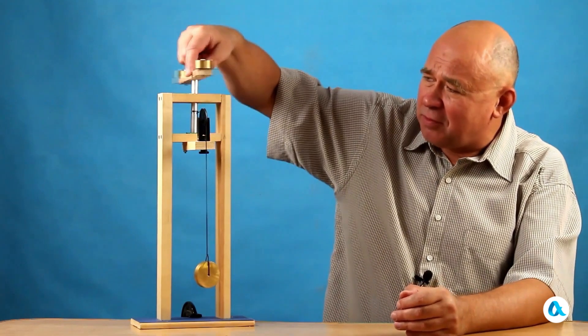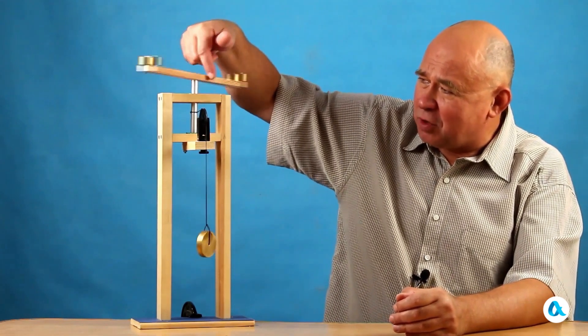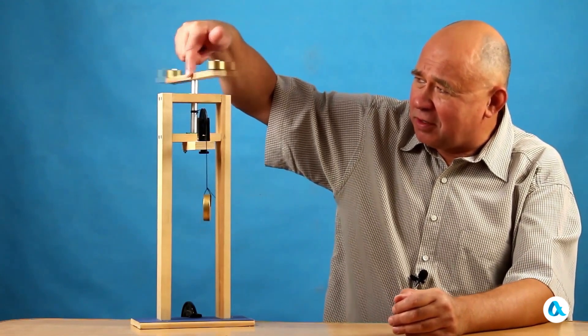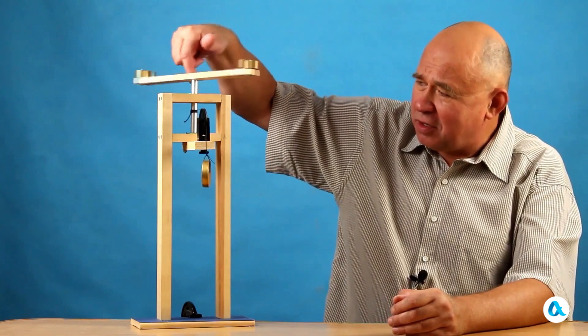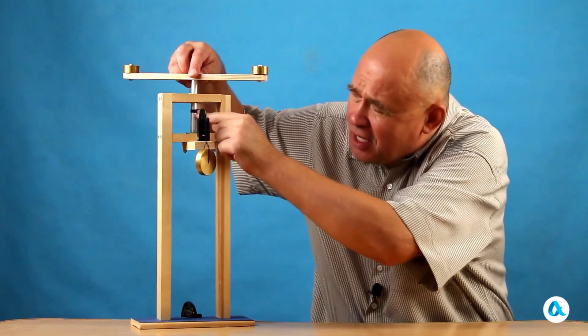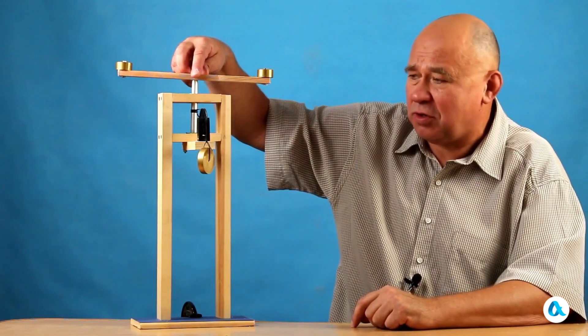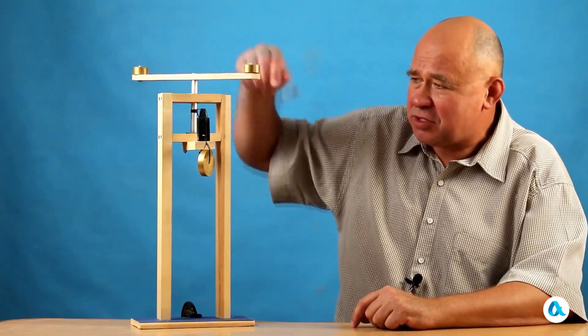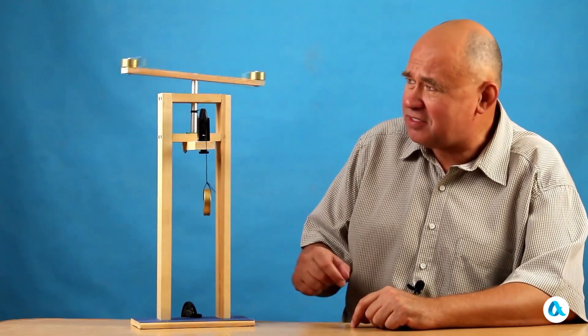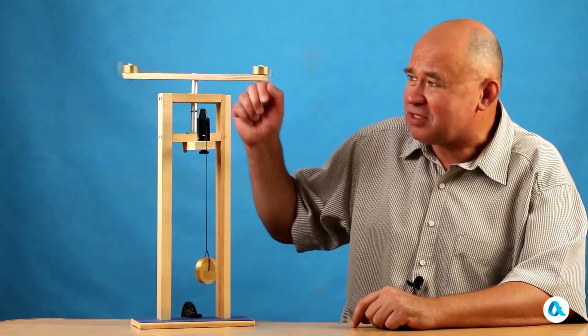Here I have the setup that you have already seen in the video Moments of the Diver. Two weights are fixed on the lever while a third weight is attached by a thread to the shaft and passed over a pulley. I carefully release the system, and the weight slowly descends and spins the weights on the lever.